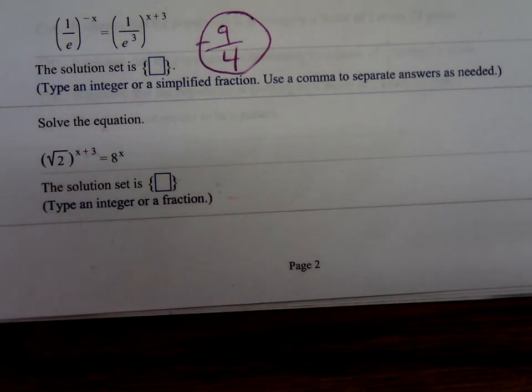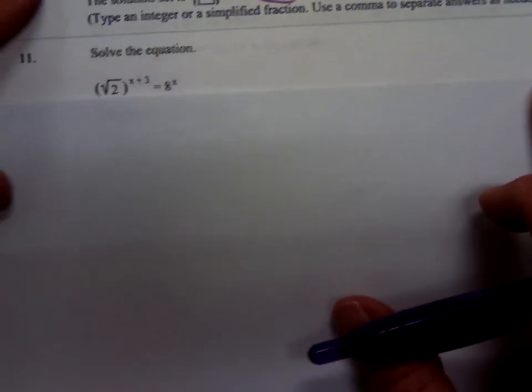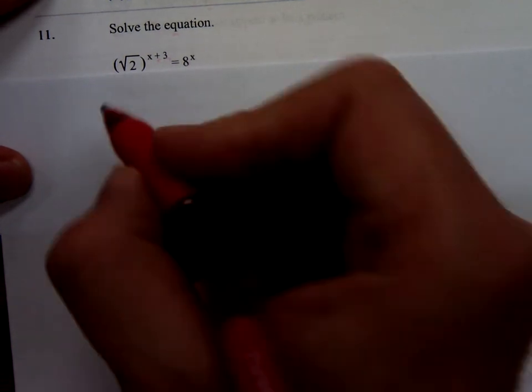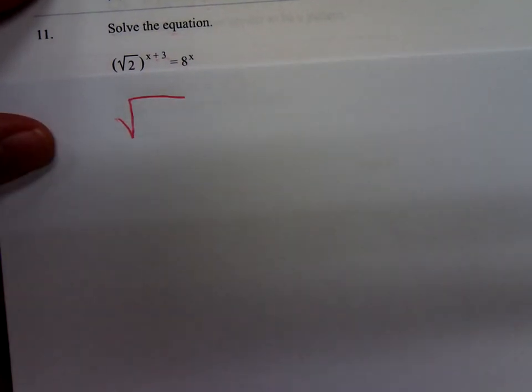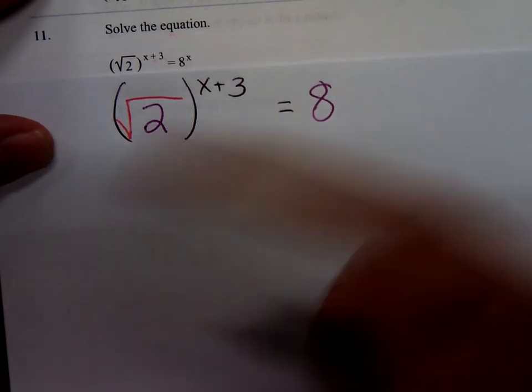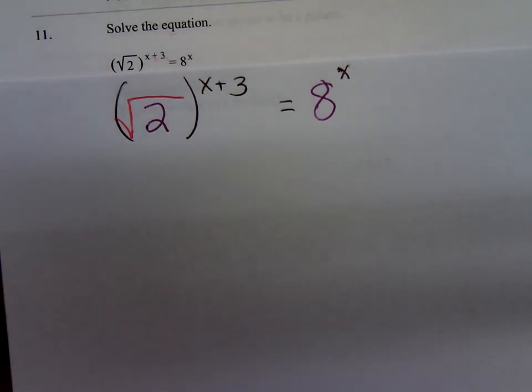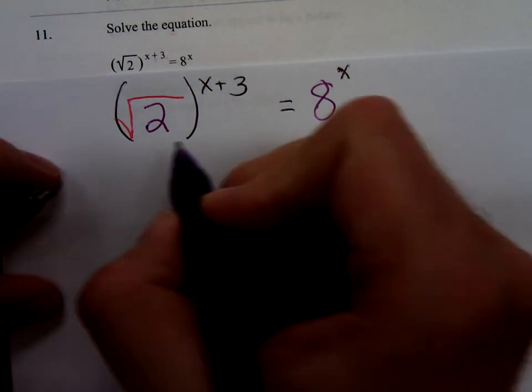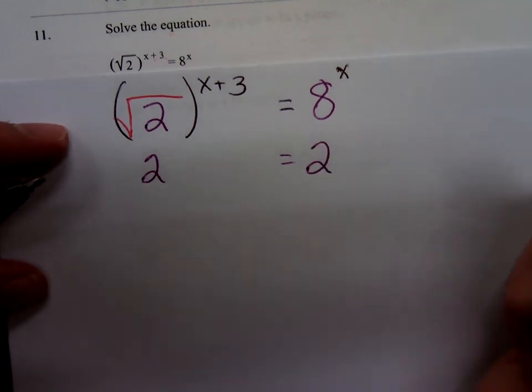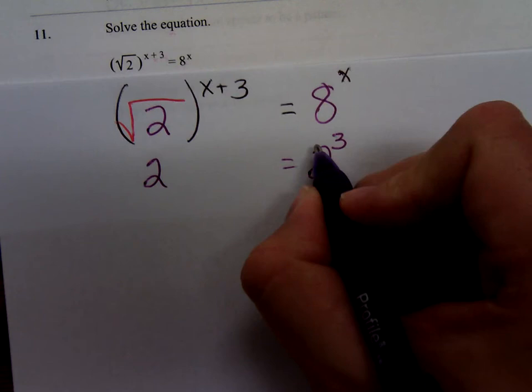This is the last one we'll do today. It has a radical in it, a square root in fact. We have a square root of 2 raised to the x plus 3 power equals the base here is an 8 raised to the x power. Well, what's our common base going to be? We're going to try to write both sides with the same base. 2. How do I write 8 as 2 to a power? 2 times 2 times 2. 2 cubed would give you the 8.